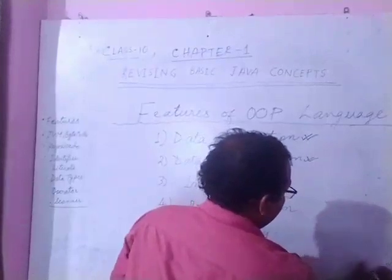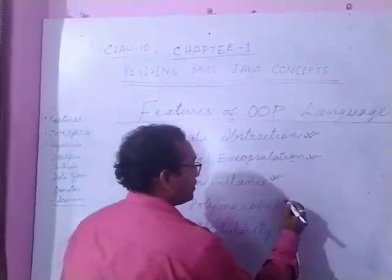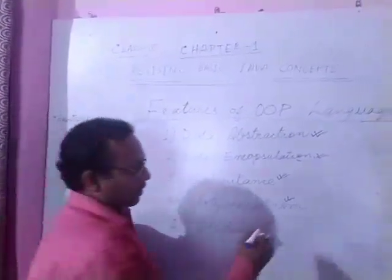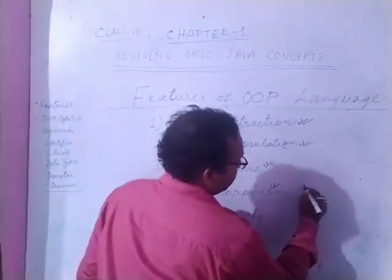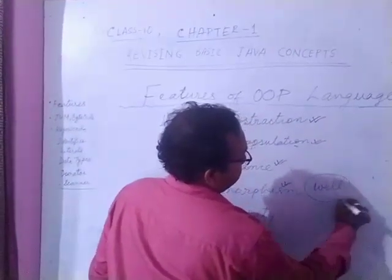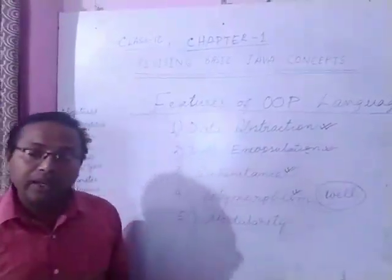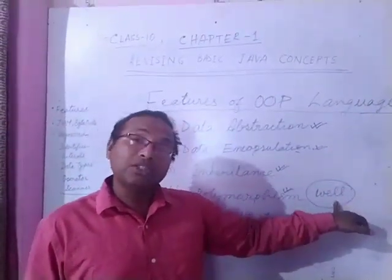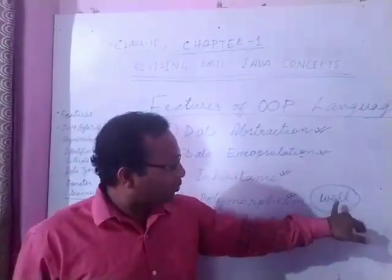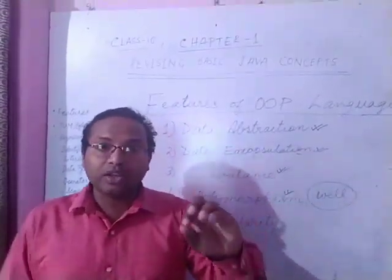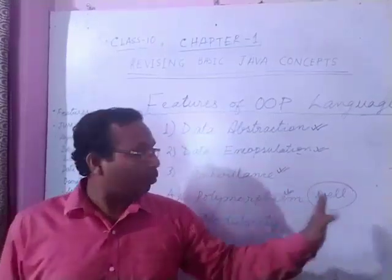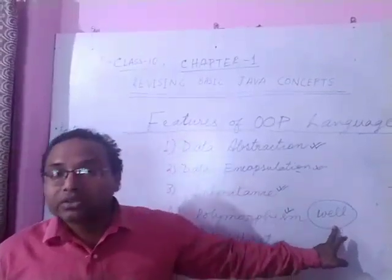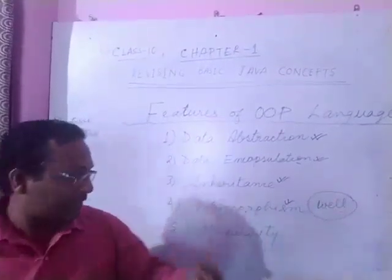Next is Polymorphism. Polymorphism means the ability to exist in more than one form. For example, take the English word 'well.' This word 'well' has multiple meanings — one meaning is 'well' means good, and another meaning of 'well' is a water body where water is stored. So it has two meanings, and according to the situation or the circumstances, the meaning is changing.